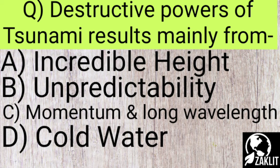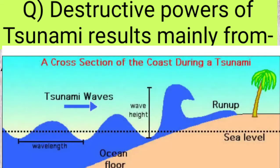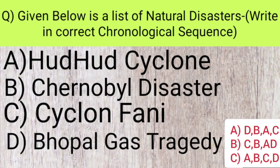The next question is: the destructive power of a tsunami results mainly from which of the following effects? The correct option is option C — momentum and long wavelength. Momentum is mass multiplied by velocity. The wavelength of a tsunami wave is the distance between two consecutive crests or two consecutive troughs, and this long wavelength contributes greatly to its destructive power.